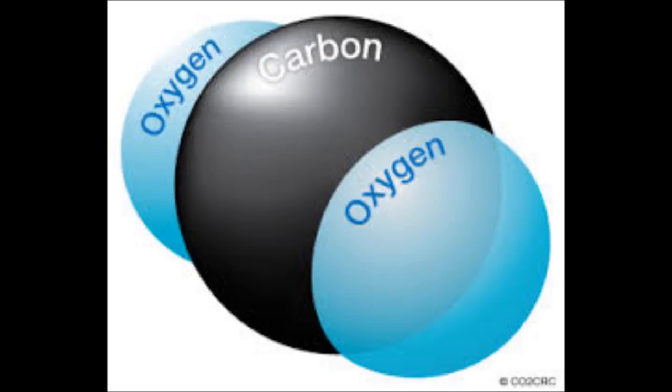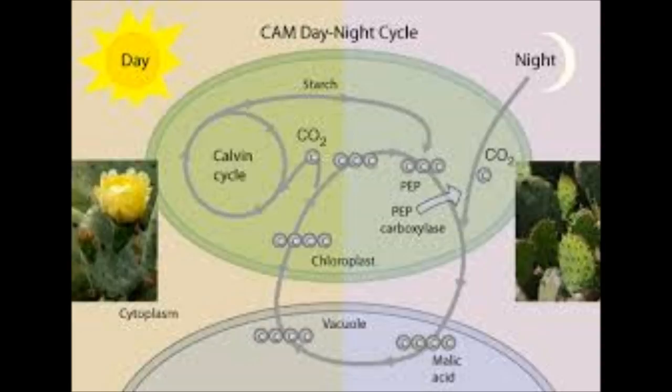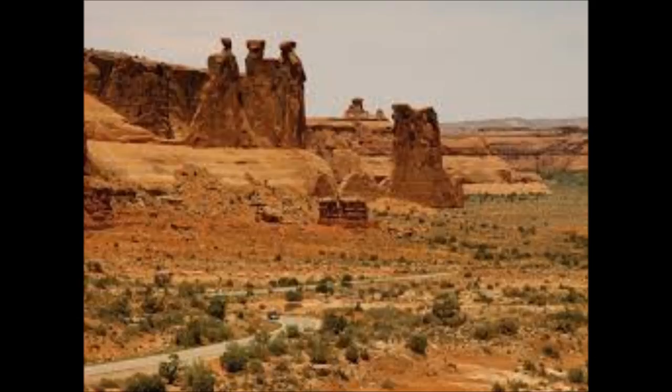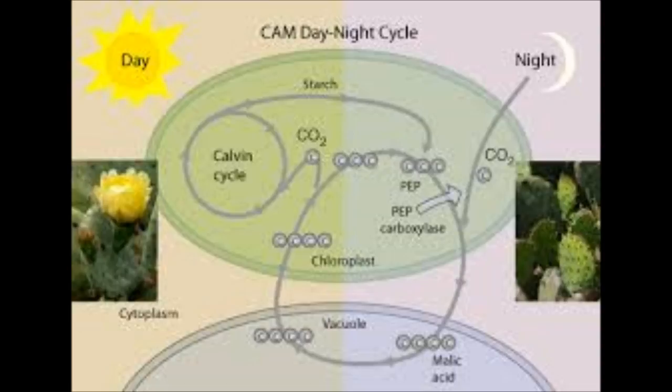The C4 pathway allows plants to fix CO2 into four-carbon compounds. The CAM pathway is used by plants that inhabit a hot, dry climate.